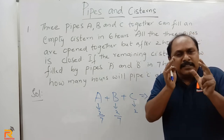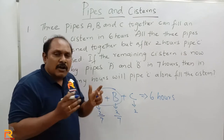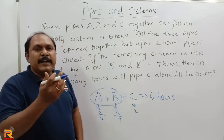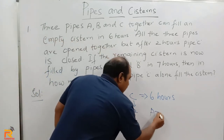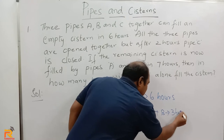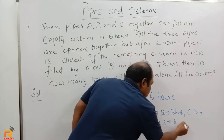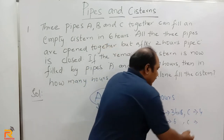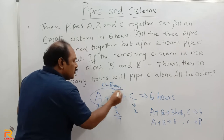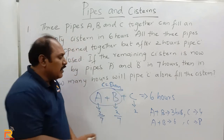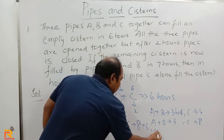So, whatever work A and B together will do in three hours, C will take four hours. Therefore, whatever work A and B together will do in six hours, C will take eight hours — three to six, four to eight, simple as that. C will take eight hours to do the work of A and B. To do his own work, C will take another six hours. So if C alone has to fill the complete tank, C will take eight plus six — that is totally 14 hours.